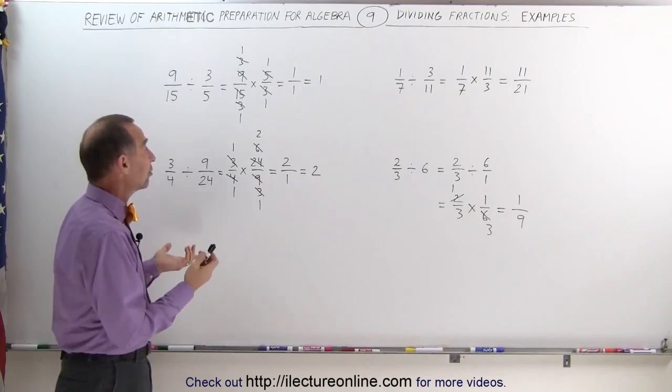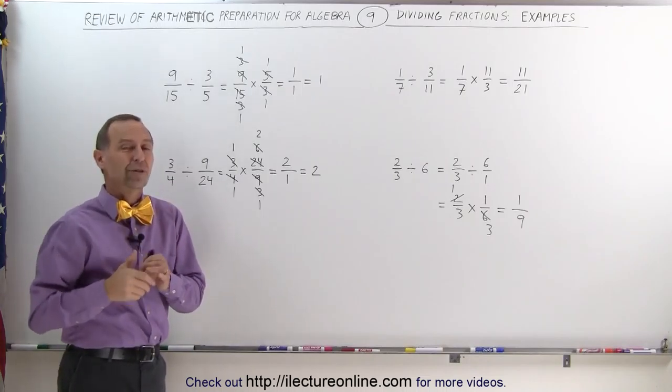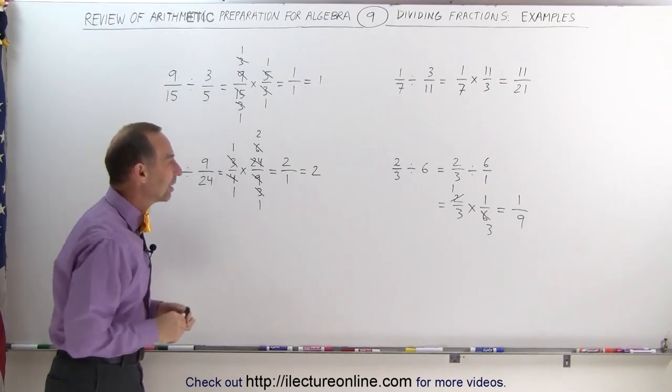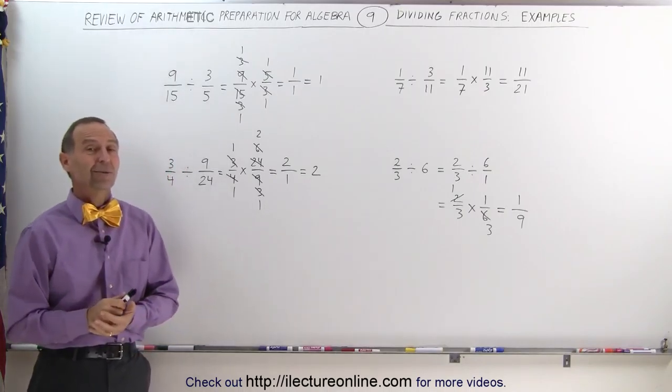So it's pretty simple. Whenever you have to divide by a fraction, you simply flip the fraction over, taking its inverse, and you multiply instead of divide. You get the correct answer, and that's how it's done.